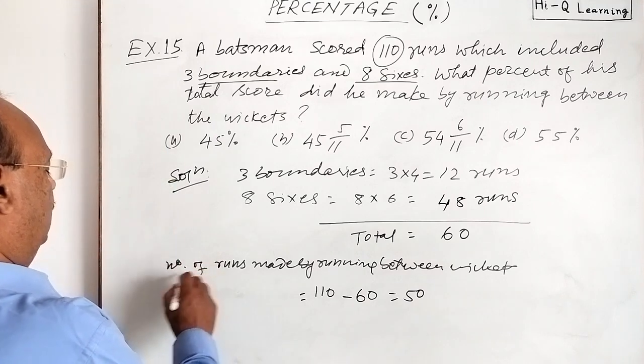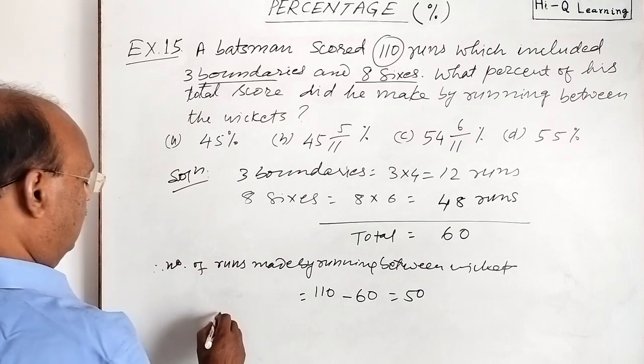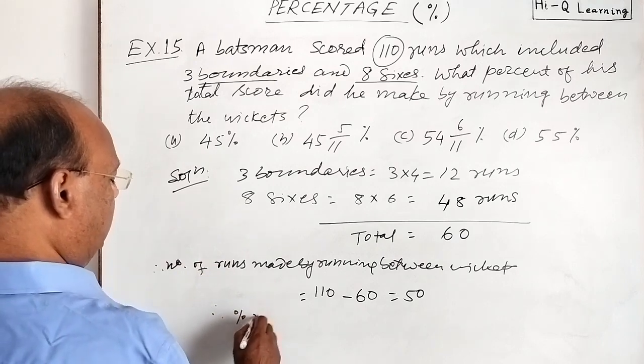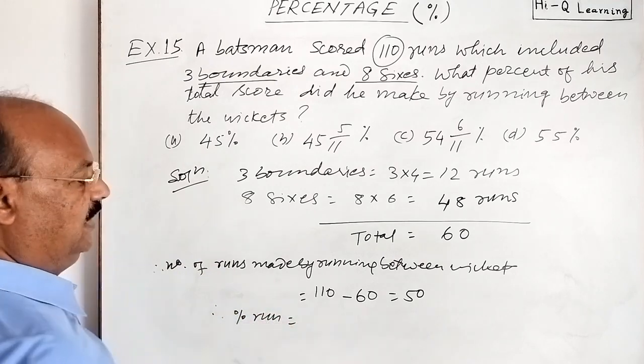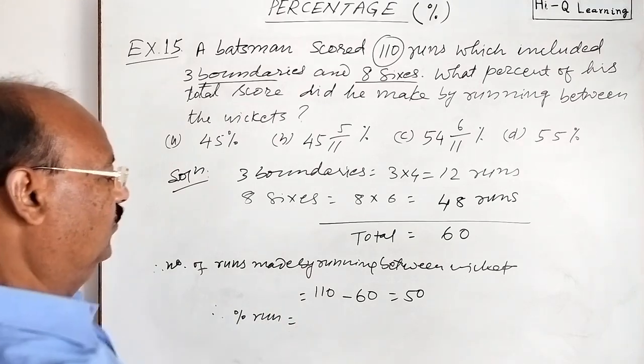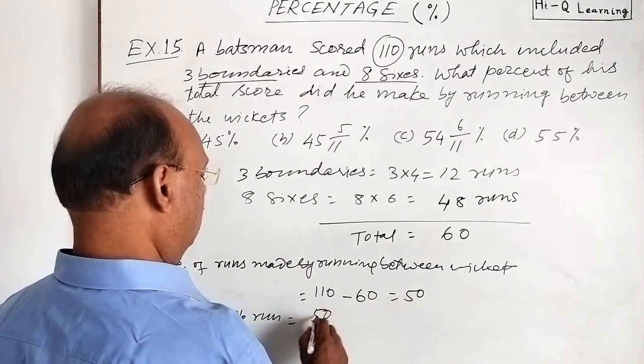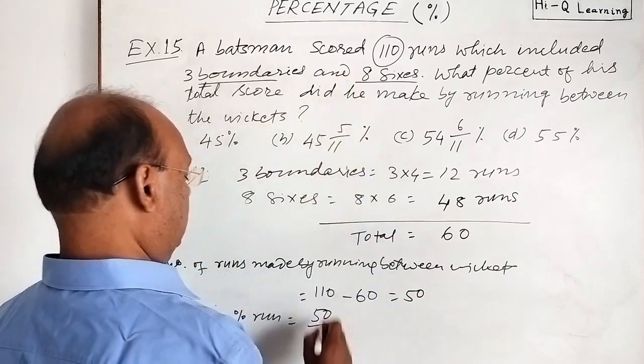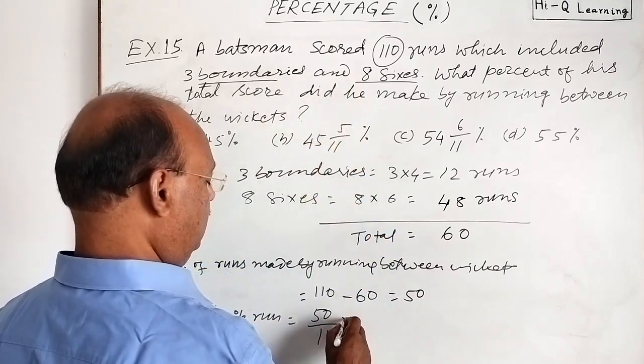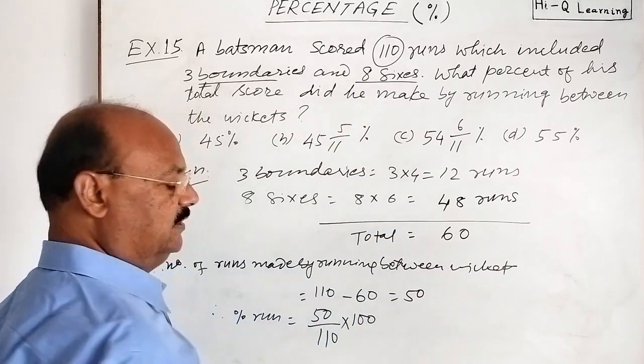And therefore, percentage run between 2 wickets will be this number 50 divided by total run is 110 into 100. Correct?